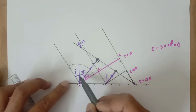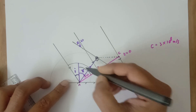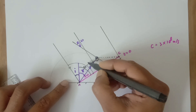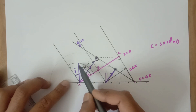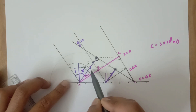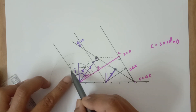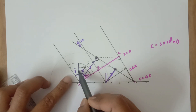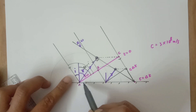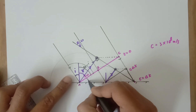Since the incident ray and wavefront make 90°, and this angle is i, the remaining angle between the wavefront and the mirror is 90° − i. Because the normal makes 90° with the mirror, the angle of incidence from the normal is 90° − (90° − i) = i.